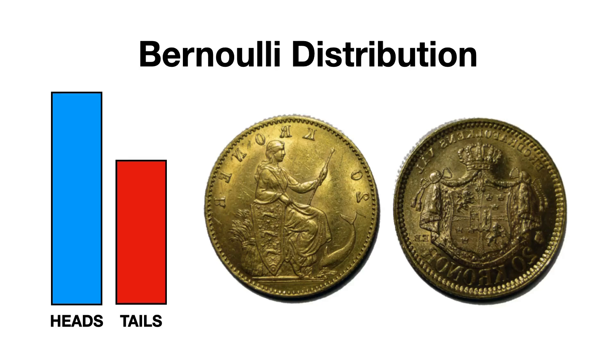Let's start with the Bernoulli distribution. This is the simplest case, a single trial with only two possible outcomes, which we often call success and failure. For example, flipping a coin can be thought of as a Bernoulli trial, where heads might represent success and tails failure.